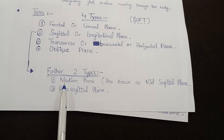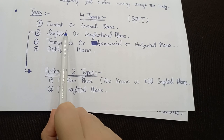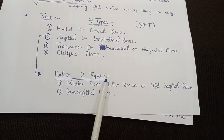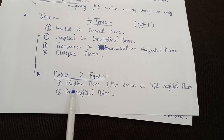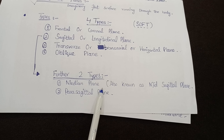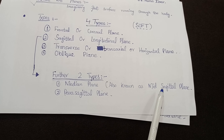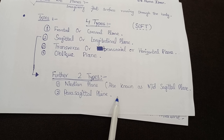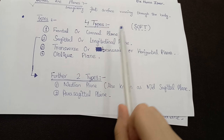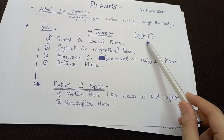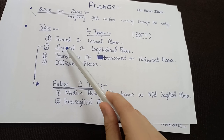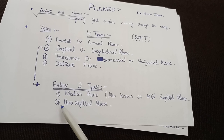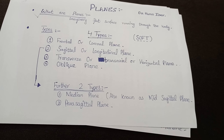Further, there are two types of sagittal plane: the median plane, also known as the mid-sagittal plane, and the parasagittal plane. So there are actually four types of planes, and the sagittal plane has further two subtypes — median and parasagittal planes.